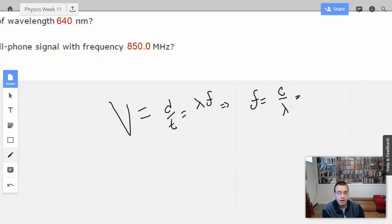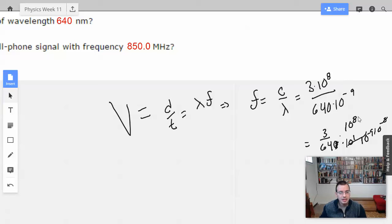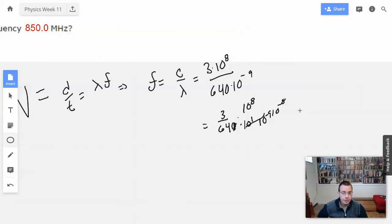So this is going to be 3 times 10 to the 8th, more like 2.99, but close enough. Over 640 times 10 to the negative 9th meters. So this will be 3 divided by 640 times, 640 times 10 to the 8th. Change that to 10 to the negative 8th, and then we have 3 over 64 times 10 to the 16th.